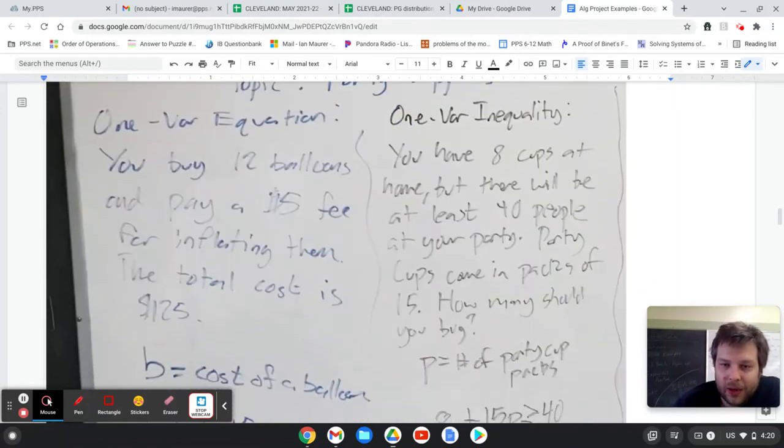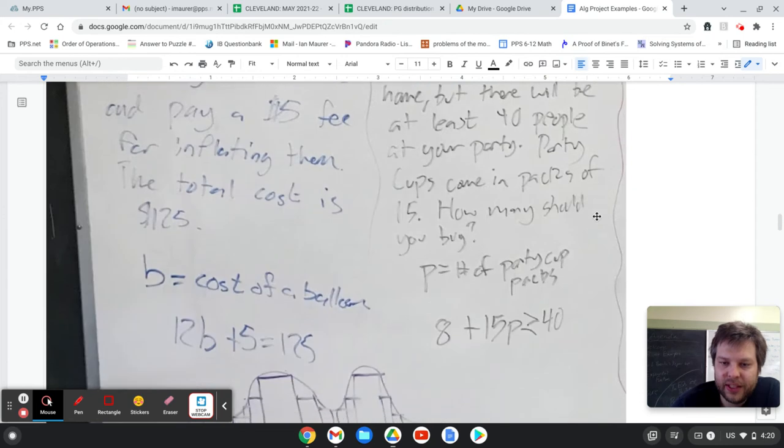One variable inequality - I thought of purchasing cups. So you have 8 cups already, but you know there's going to be at least 40 people, and you can buy packs of 15 cups. And so 8 plus 15p needs to be greater than or equal to 40. That way, everybody has at least 1 cup to use.